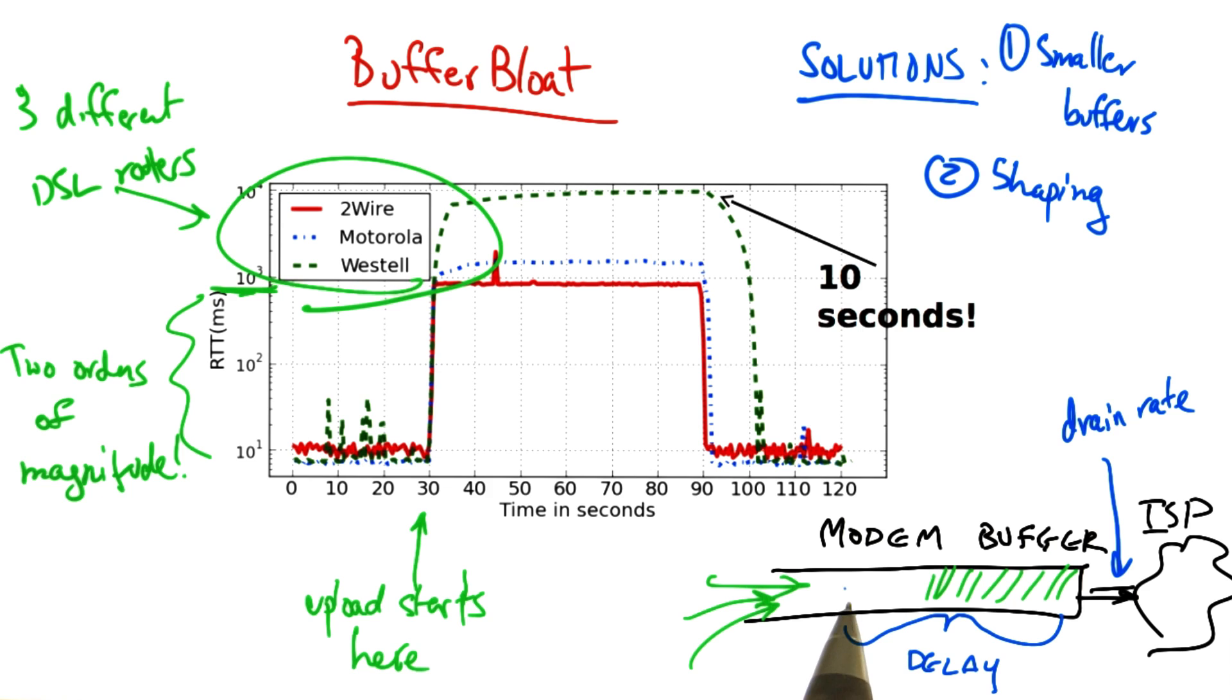If we shape traffic such that traffic coming in to the access link never exceeds the uplink that the ISP has provided us, then the buffer will never fill.